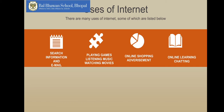Uses of internet — how and where do we use internet? For searching information and emailing, that is communicating. For entertainment, that is for playing games, listening to music, watching movies. Online shopping and advertisement, which is in trend these days. Online learning, which is a basic necessity these days, and chatting.